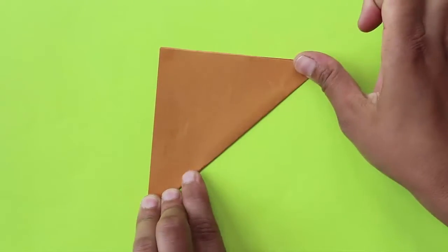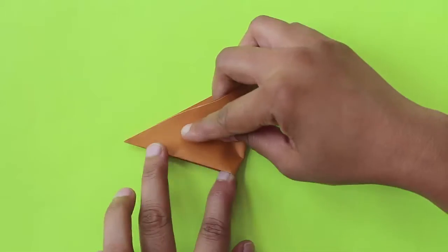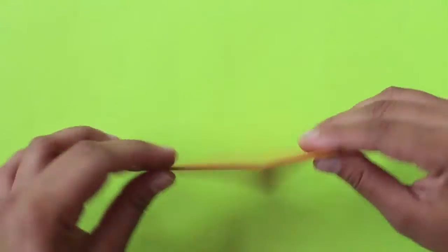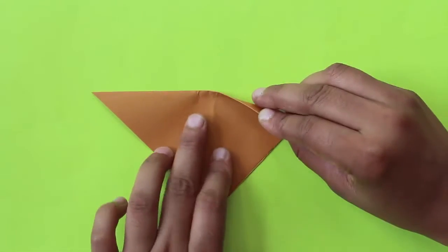First, fold along the diagonal of the square to make a big triangle. Fold this big triangle in half to crease the midline, then open the paper.